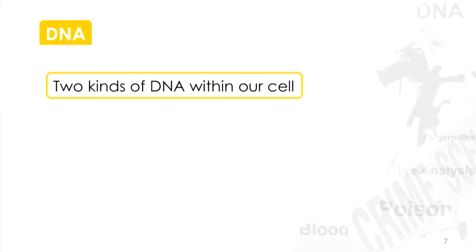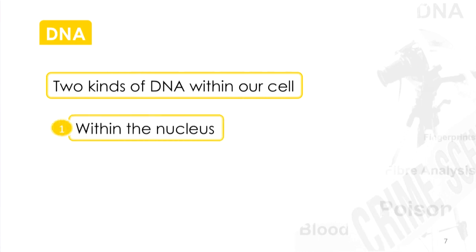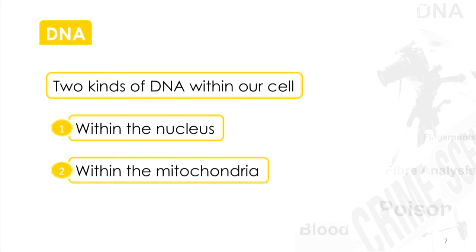So far, we've been talking about the DNA present in the nucleus, and that is the DNA that contains our genetic information. But it turns out that there are actually two kinds of DNA within our cell. Not only is there DNA within the nucleus, there is also DNA in what is called the mitochondria. The mitochondria are present in the cell, they're part of the energy system, and they contain their own DNA, which is different to the nuclear DNA.